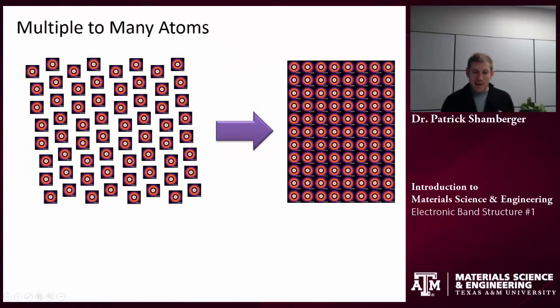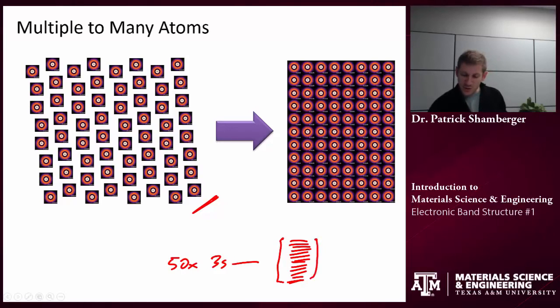This happens more and more. So remember, the number of orbitals in equals the number of orbitals out. So if I start off with 50 3s orbitals, I'm going to end up with a very closely stacked series of energy levels, and there will be 50 energy levels in here.